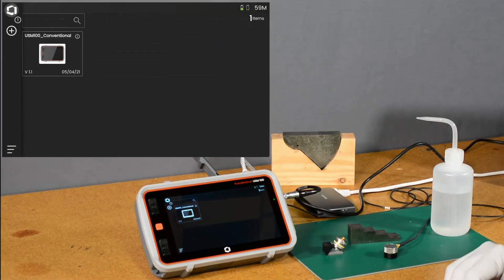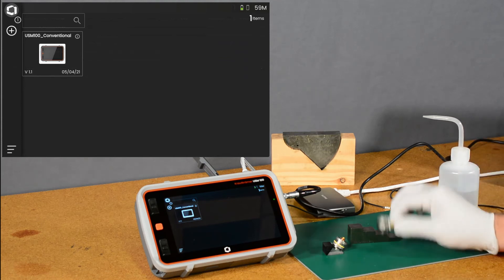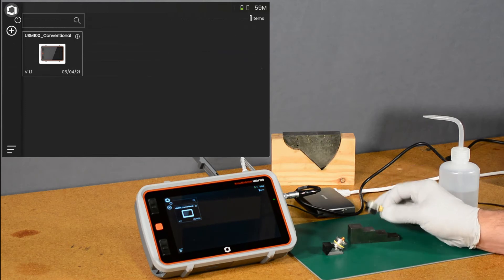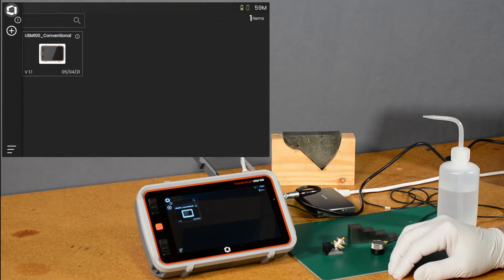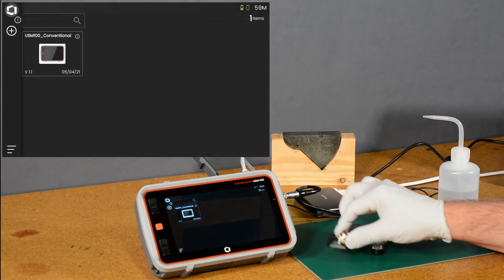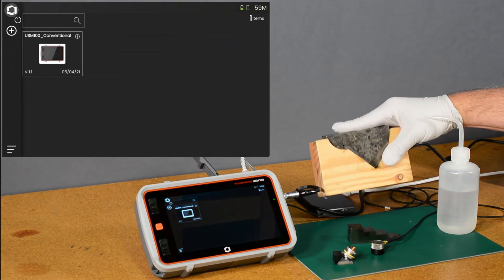We're going to look at two different ways of doing this. In the first, we're going to look at using a straight beam probe on a traditional step block, show you a quick way to get that dialed in, and then we'll look at an angle beam probe on our DSC calibration block.